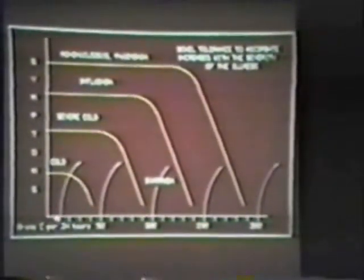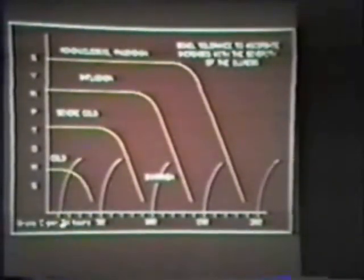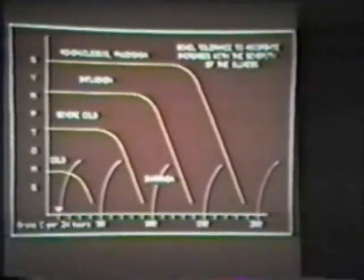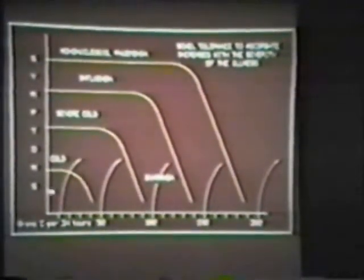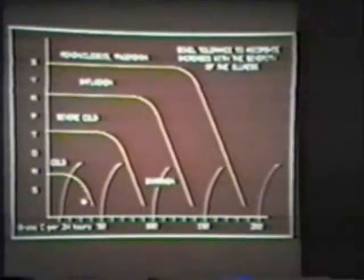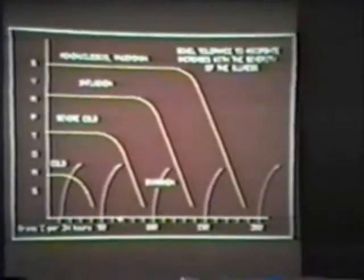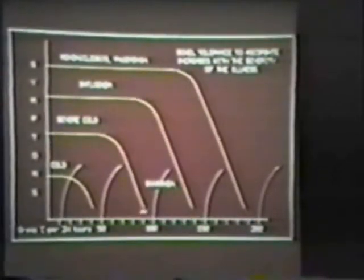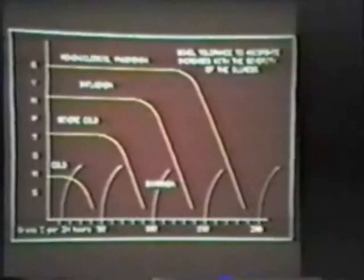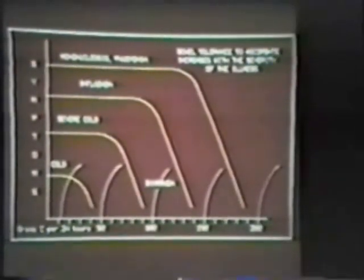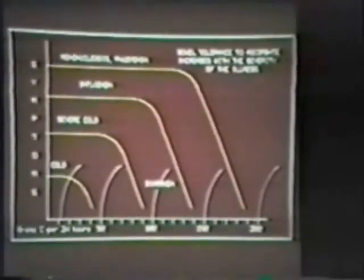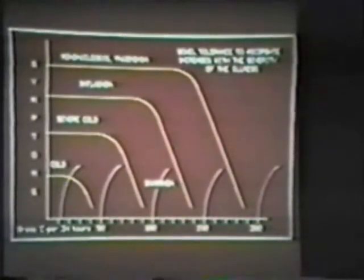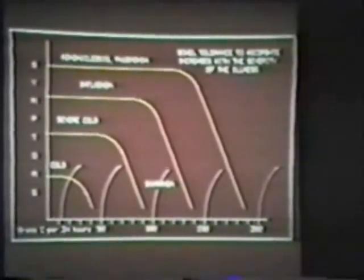So diarrhea is produced at, say, 15 grams when a person is perfectly well. With just a mild cold, they may go up to 30 to 60 grams. With a severe cold, maybe 100 grams. With influenza, 150 grams. And with mononucleosis, sometimes in excess of 200 grams per 24 hours. Clearly, something was happening that I didn't learn in medical school.